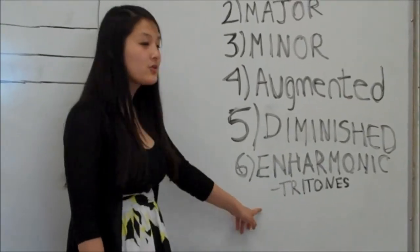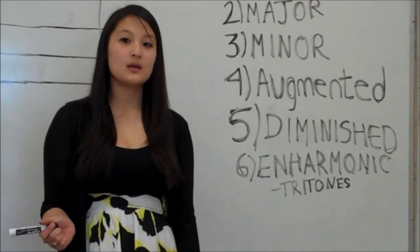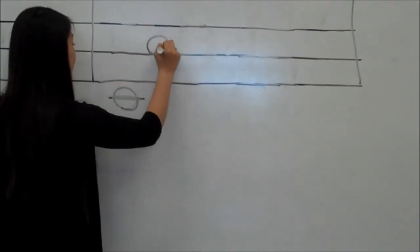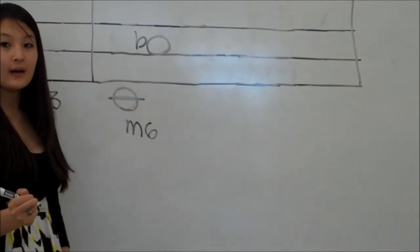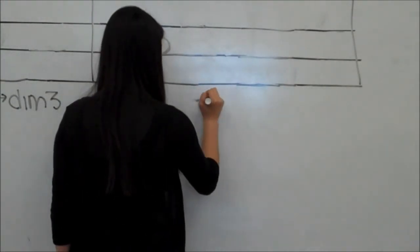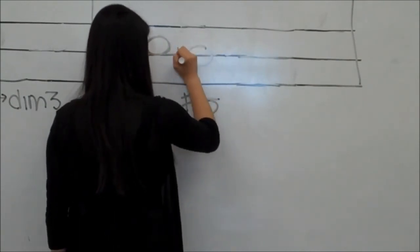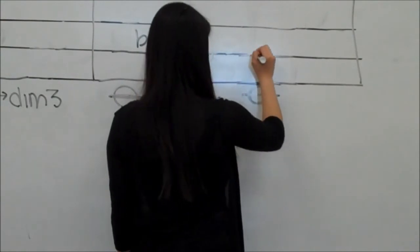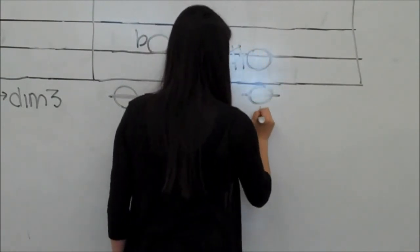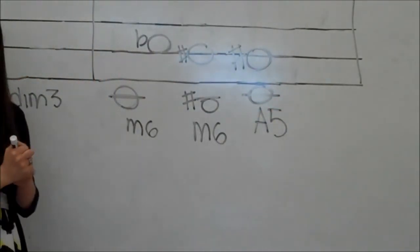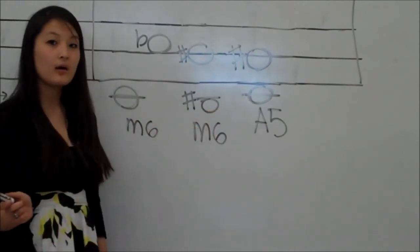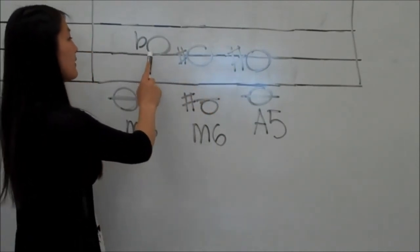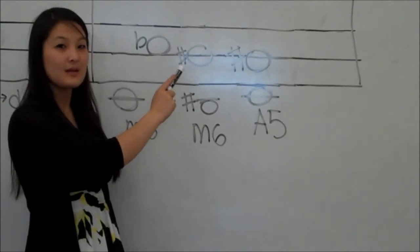Next, we have enharmonic intervals, and tritones fall under this category. Enharmonic intervals are intervals that sound the same but are spelled differently. For example, if we had a C to an A flat, which would be a minor sixth, and we also had a B sharp going to a G sharp, which would be another minor sixth, and then a C going to a G sharp, which would be an augmented fifth — these would all be enharmonic because C and B sharp are notes that sound the same but are spelled differently. And the same for the top notes: A flat and G sharp are sounding the same but spelled differently.